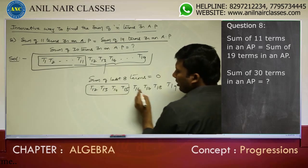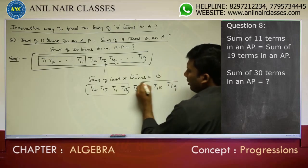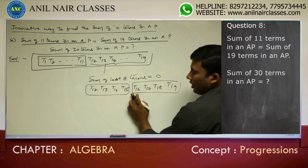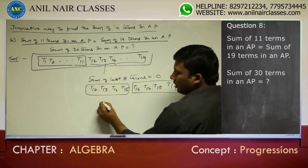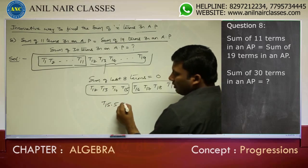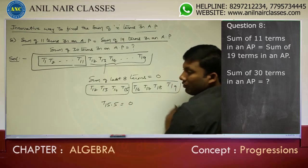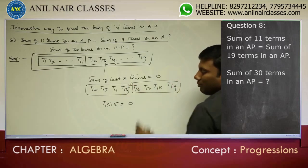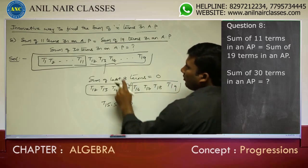There are 4 terms to the left and 4 terms to the right of the middle. What is the middle term? The middle value is 15.5, and since the sum of those 8 terms is 0, T15.5 equals 0.